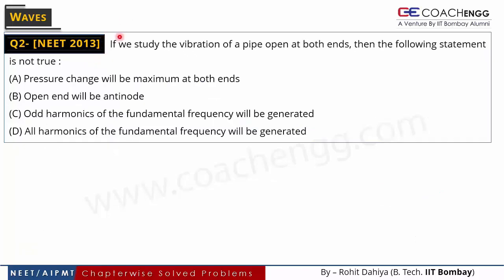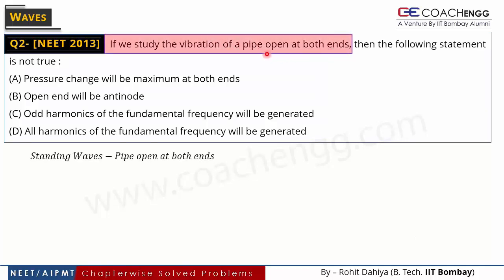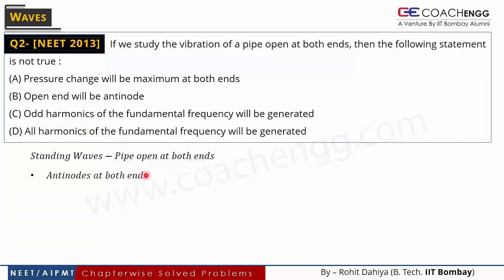The next NEET 2013 problem was fact-based. If we study the vibration of a pipe open at both ends, we need to discuss the organ pipe with both ends open — what kind of standing waves are generated inside it and their properties. The question asks which of the following statements is NOT true. We are given 4 statements and need to find the false one. First property: at the open ends, antinodes are formed.